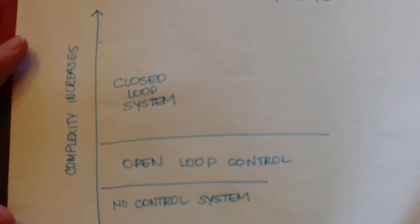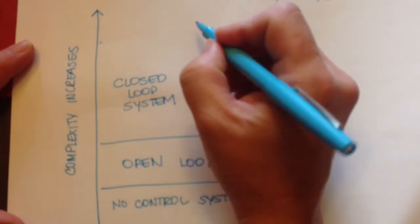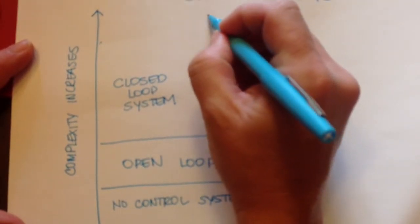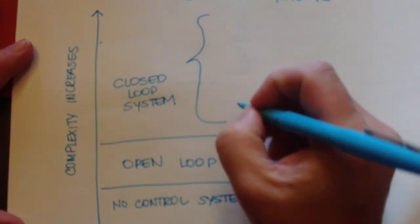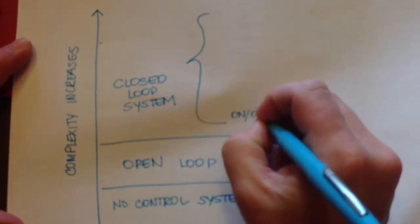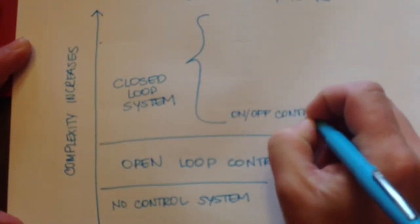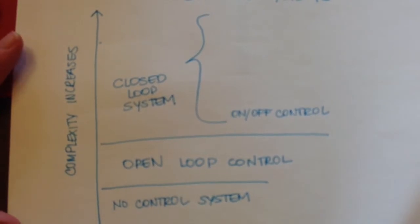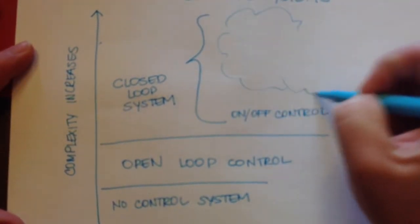Then the next layer would be a closed loop system. The least complex, and there's going to be a wide variety of control systems here under closed loop. The least complex here would be what's called on-off control.